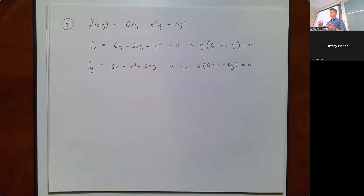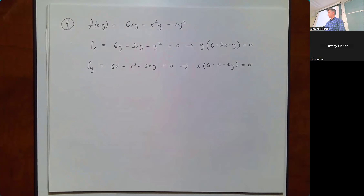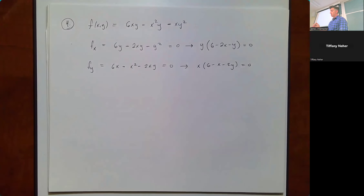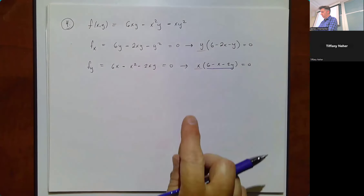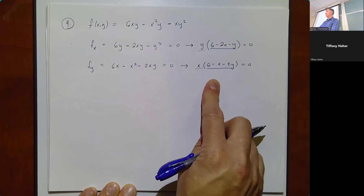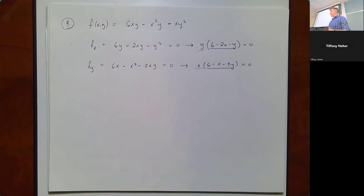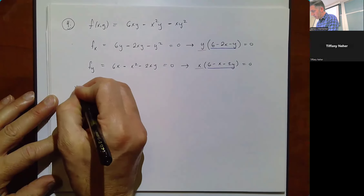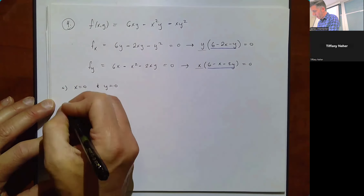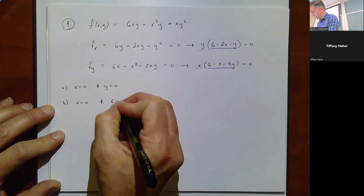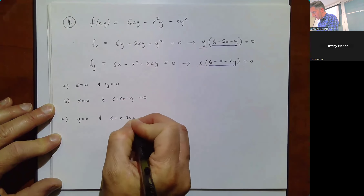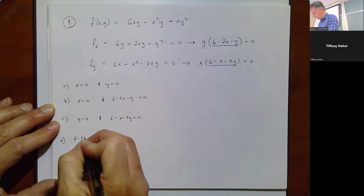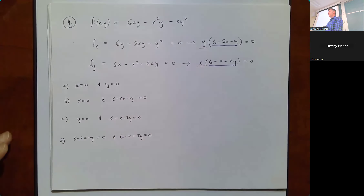To solve this system, both equations must equal zero simultaneously. The possibilities are: (1) x = 0 and y = 0; (2) x = 0 and 6 - 2x - y = 0; (3) y = 0 and 6 - x - 2y = 0; or (4) both linear factors equal zero. Those are the only four options.